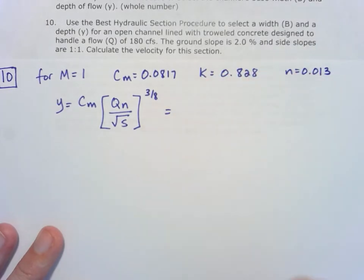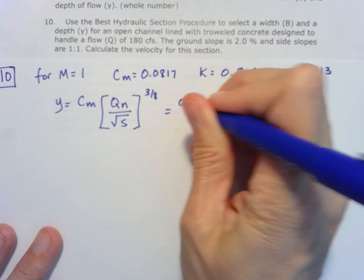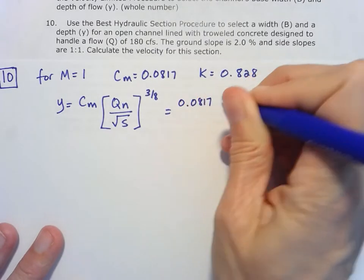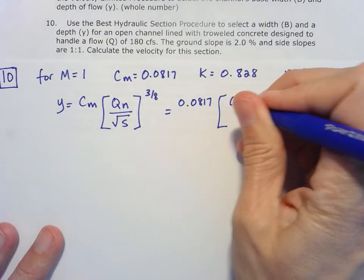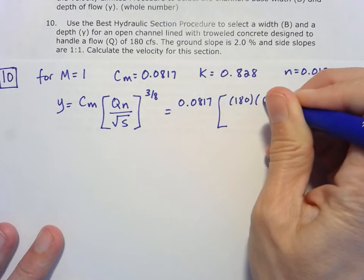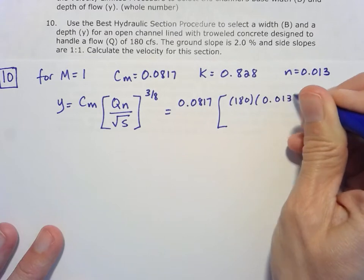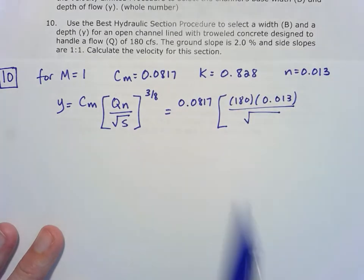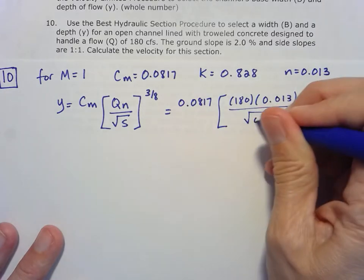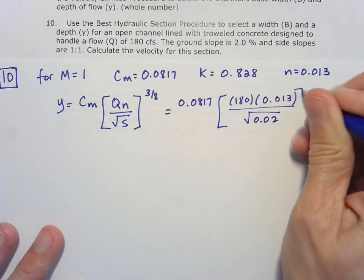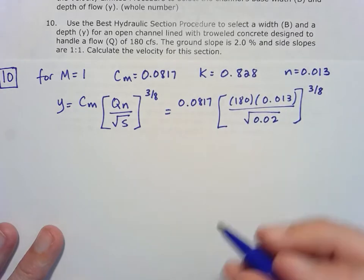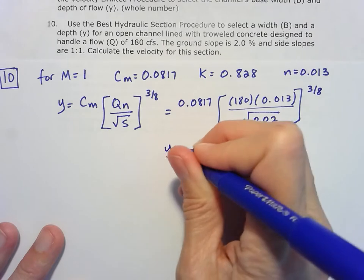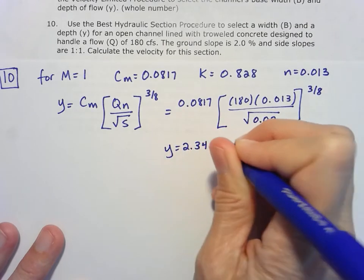So now we'll substitute our values in. We know our C_M is 0.0817. And then the quantity here is that Q, which is 180, given to us in the problem statement. The N is 0.013, all divided by the square root of slope, which is given to us as 2%. We'll put that in decimal form, 0.02. And then we take that whole quantity to the 3/8ths. And so what we get there at the end is Y is equal to 2.34 feet.